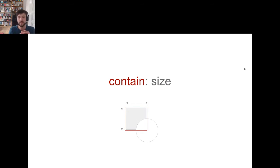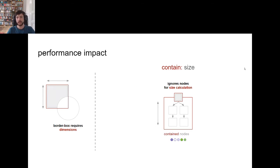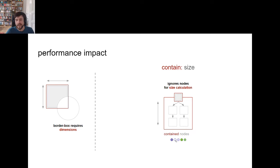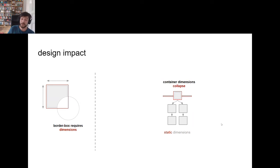There is one last value in the contain area: `contain: size`. The impact is harder to measure directly, but it means the browser can skip even more work when calculating the dimensions of a component — similar to giving fixed dimensions upfront but with additional optimizations. This also reduces the purple layouting work. One important design implication: if we don't maintain a statically set height on the box, it will collapse and no elements will be visible.